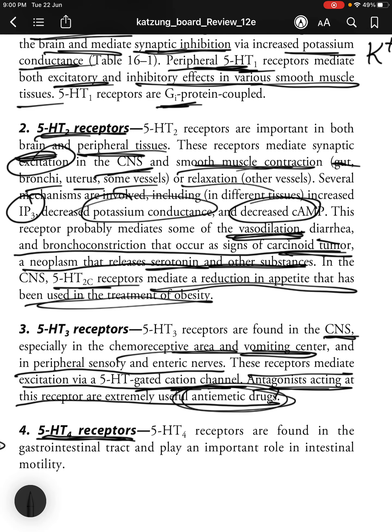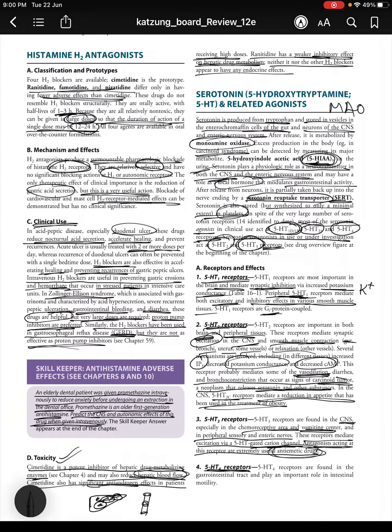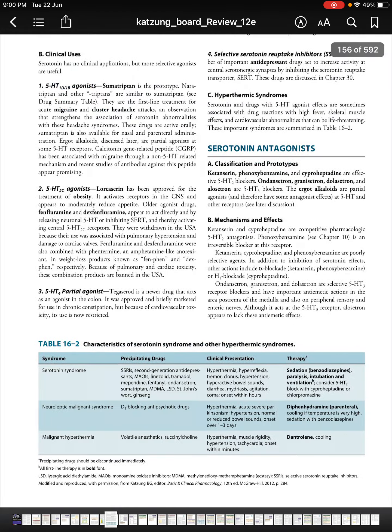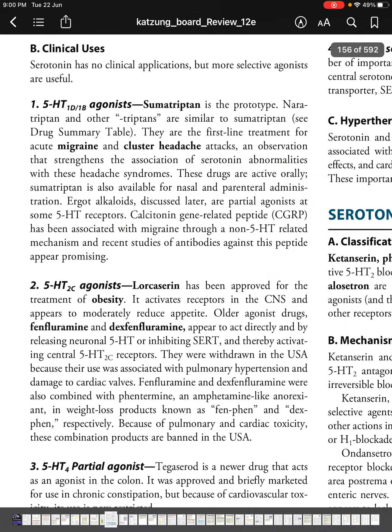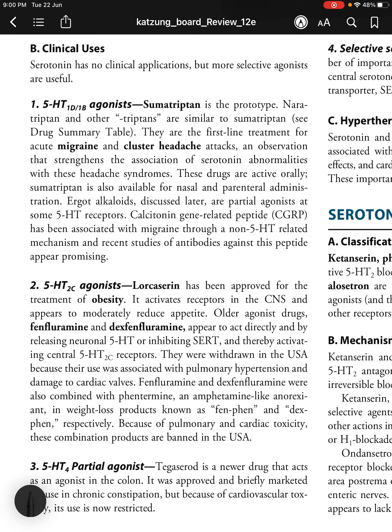5-HT3 receptors are found in the CNS, especially in the chemoreceptor trigger zone and area postrema, and in peripheral sensory and enteric nerves. They mediate excitation via a 5-HT-gated cation channel. Antagonists at this receptor are extremely useful anti-emetic drugs, acting directly at the vomiting center. 5-HT4 receptors are found in the GI tract and play an important role in intestinal motility.